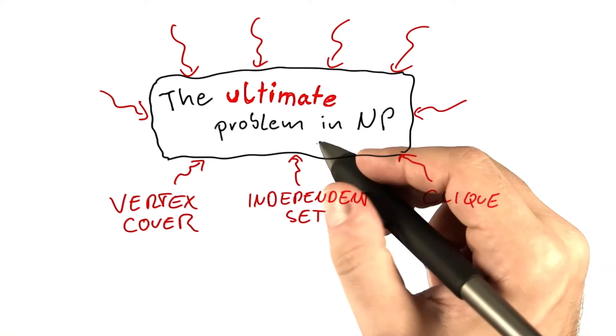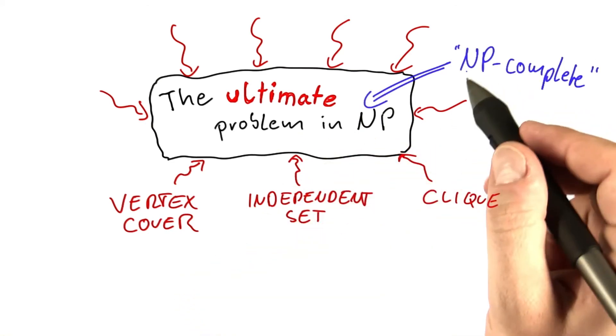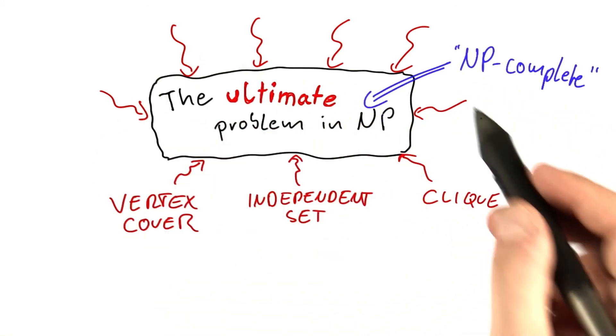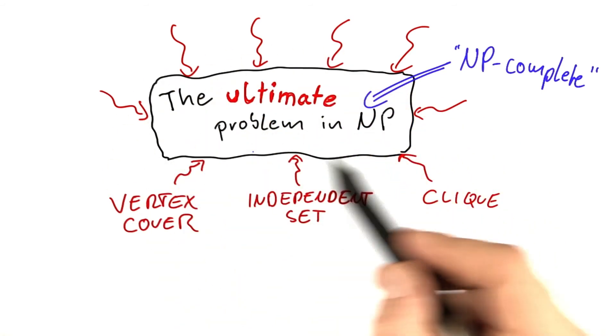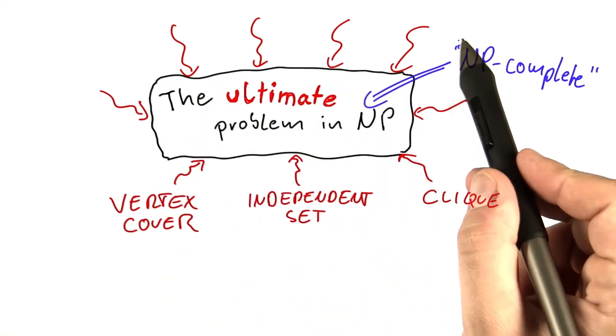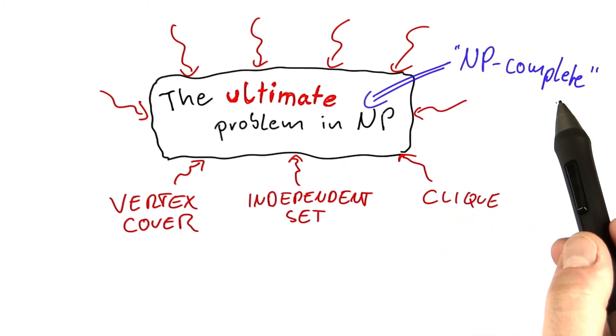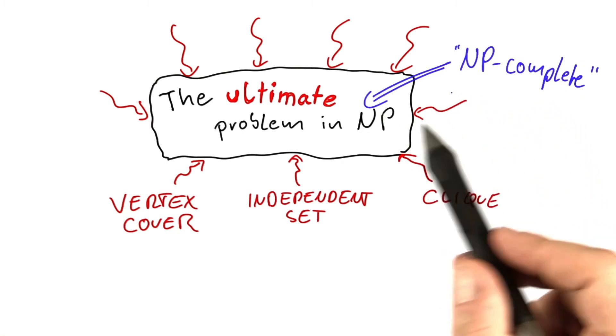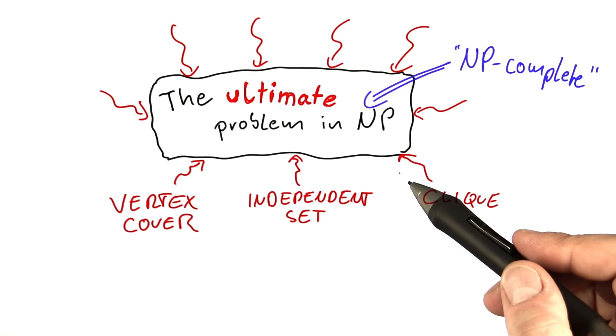then that problem is called NP-complete because in a way it represents all of the problems in NP. An NP-complete problem is basically capable of solving or representing all other problems that are contained in NP.